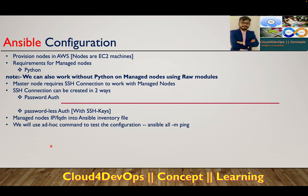Hello everyone, welcome to the channel. Welcome to the third lecture of the Ansible series where in this lecture we will try to configure Ansible managed nodes and try to connect the managed node from the master engine which we created as part of our last lecture. For that, first we have to provision the managed nodes in AWS. Python has to be there, but there is also a note that we can work without Python on the managed node using raw modules.